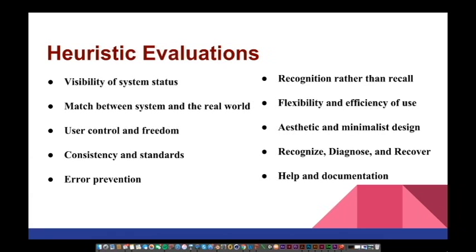Jacob Nielsen and Rolf Mollick introduced the heuristic evaluation as a way to save practitioners' time and money over the standard lab usability study. They argued that there are 10 heuristics that products should adhere to for a good user experience. These heuristics are shown here. Visibility of system status, which basically means to keep the user informed about the status of your system and give them feedback.